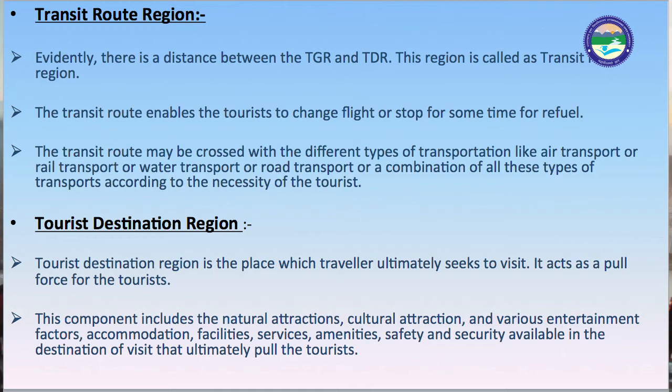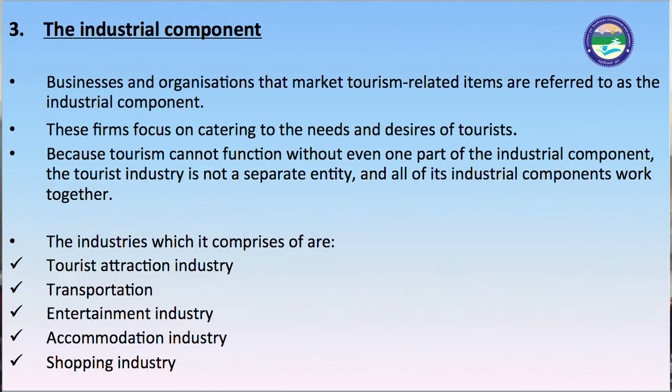The Tourist Destination Region is the place which the traveler ultimately seeks to visit. It acts as a pull force for the tourist. This component includes natural attractions, cultural attractions, various entertainment factors, accommodation facilities, services, amenities, and safety and security available at the destination, all of which ultimately pull the tourist.